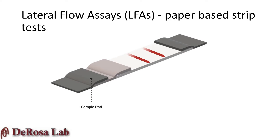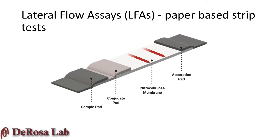The sample pad is where the sample or specimen is introduced and often contains a series of buffers or other solutions to make the sample suitable for detection. Next, the sample will migrate to the conjugate pad containing the detector particles. In our work, this pad contains aptamer-coated gold nanoparticles that are specific for the analyte of interest. The contents of the conjugate pad, along with the analyte if present, will then migrate up the assay along the nitrocellulose membrane through capillary action. Any excess sample is then absorbed by the absorption pad at the end of the strip.